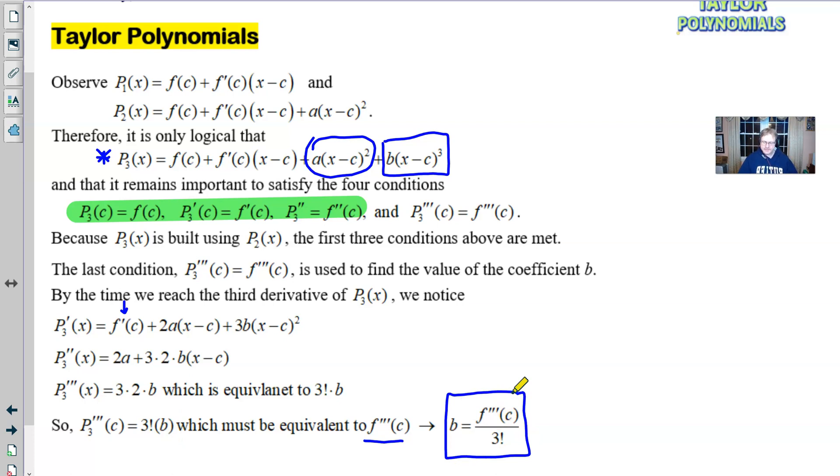So now we know that P sub 3, third derivative, is 3 times 2 times B. If we evaluate that at C, we still get 3 factorial times B. And we know that that still has to be equivalent to the third derivative of F. So that means the B, when we solve for it, is the third derivative evaluated at C divided by 3 factorial. Now we're on to something. If you remember back, we said that A was 1 over 2. B is 1 over 3 factorial. And you could put a factorial on that 2. Don't tell anybody. But you can because 2 is the same as 2 factorial.